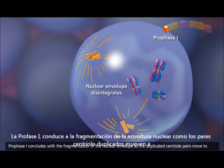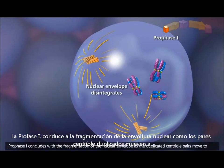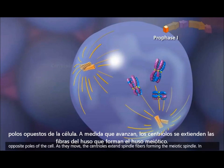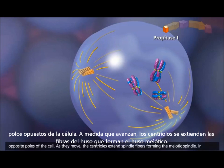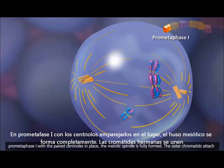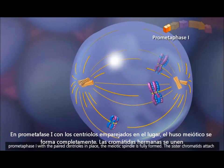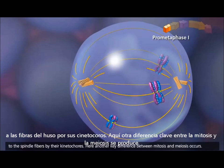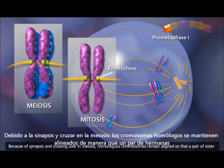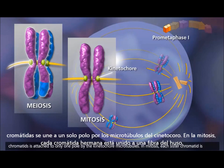Prophase I concludes with the fragmentation of the nuclear envelope as the duplicated centriole pairs move to opposite poles of the cell. As they move, the centrioles extend spindle fibers, forming the meiotic spindle. In prometaphase I, with the paired centrioles in place, the meiotic spindle is fully formed. The sister chromatids attach to the spindle fibers by their kinetochores. Here, another key difference between mitosis and meiosis occurs: because of synapsis and crossing over in meiosis, homologous chromosomes remain aligned, so that a pair of sister chromatids is attached to only one pole by the kinetochore microtubules.